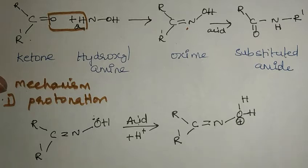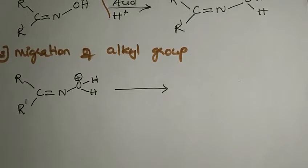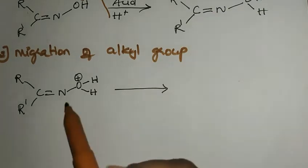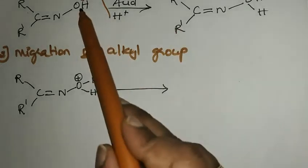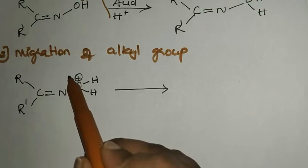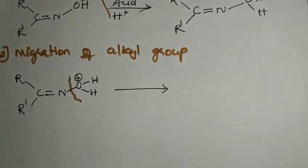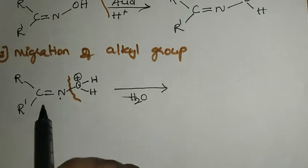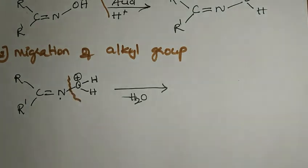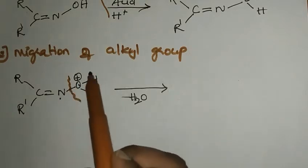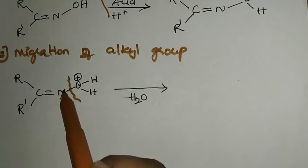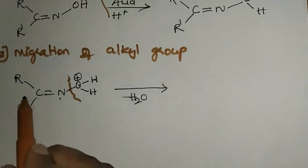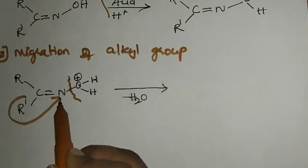The next step is migration of alkyl groups. After protonation, OH was a bad leaving group, but once protonated it becomes a good leaving group. So the water molecule leaves from the nitrogen. Once it leaves, the nitrogen becomes highly electron deficient and unstable. To make it stable, an alkyl group will migrate to the electron-deficient nitrogen.